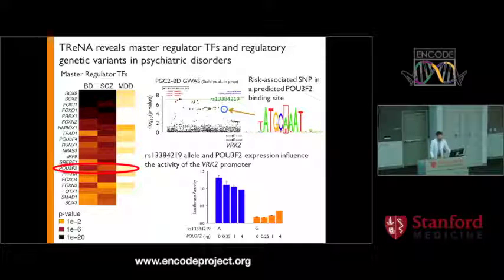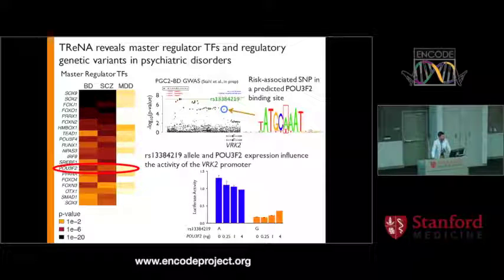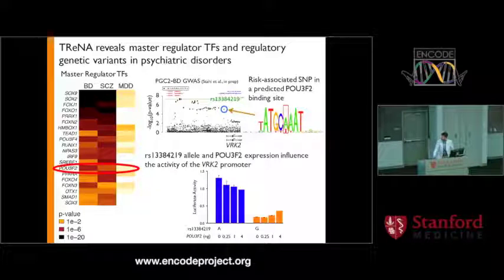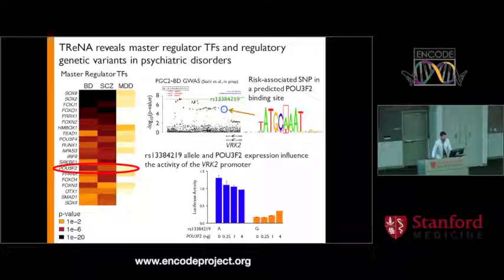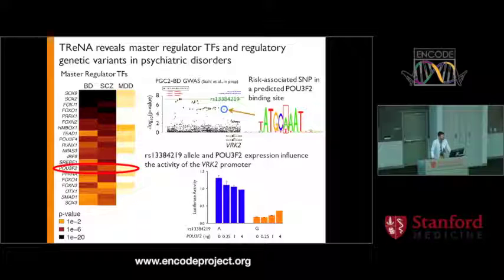We then used the transcription factor binding sites from our model to identify causal variants on haplotypes associated with bipolar disorder and schizophrenia risk. For at least a few loci, we were able to identify very interesting variants, including a predicted binding site for PU3F2 in the promoter of the VRK2 gene. We've now done luciferase assays and additional functional validations demonstrating that this variant in the VRK2 promoter modulates the activity of that promoter in a PU3F2-dependent fashion, identifying at least one functional variant on that risk haplotype.